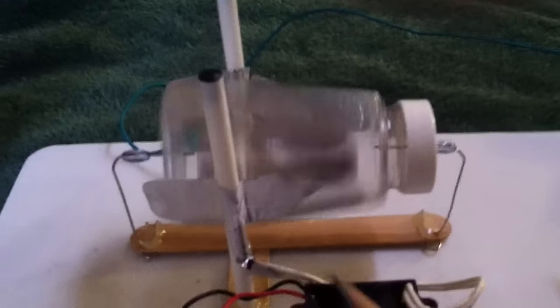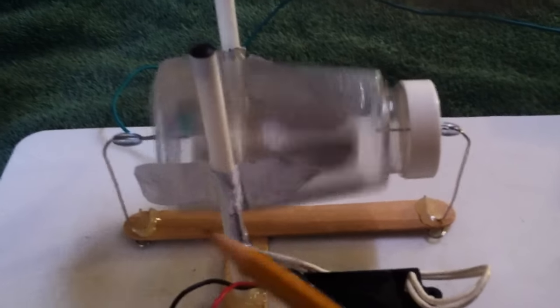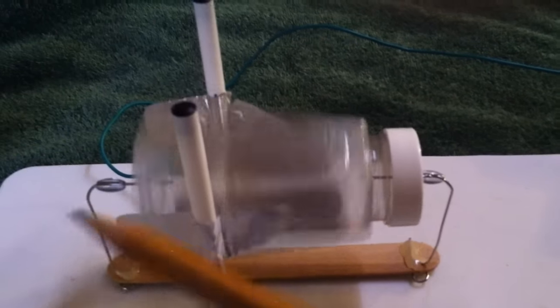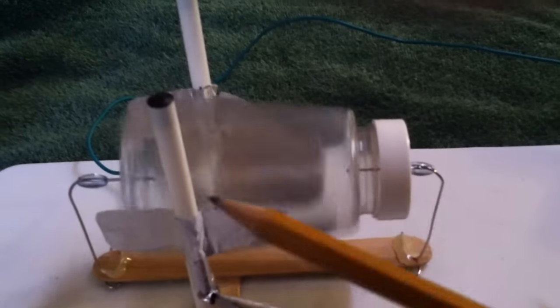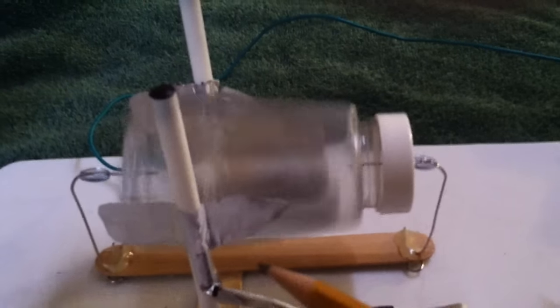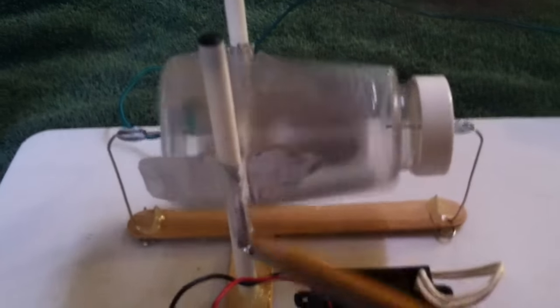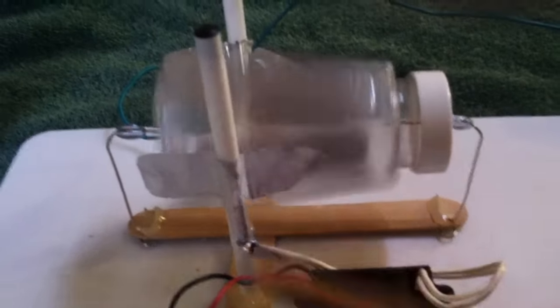The key to it is you have to really isolate the charges. If there's any pathway at all for the charges to bleed off because it's high voltage, you can't get the charge separation. That's one of the keys - these can't be wood. These have to be plastic. Otherwise, the high voltage just travels through the wood.